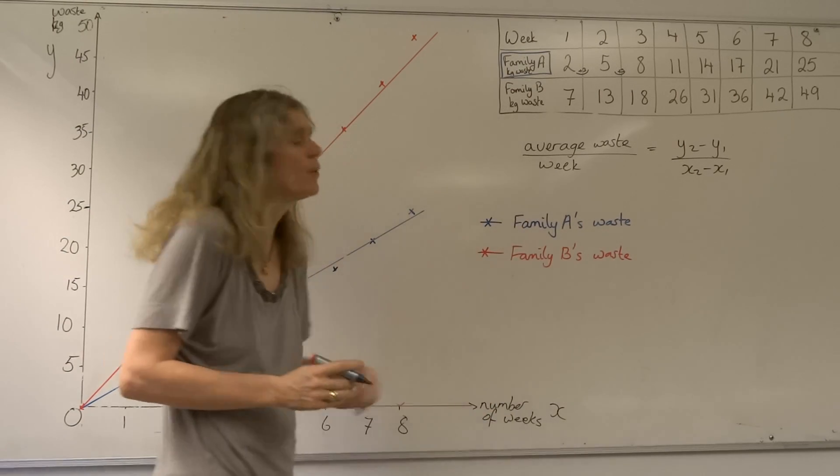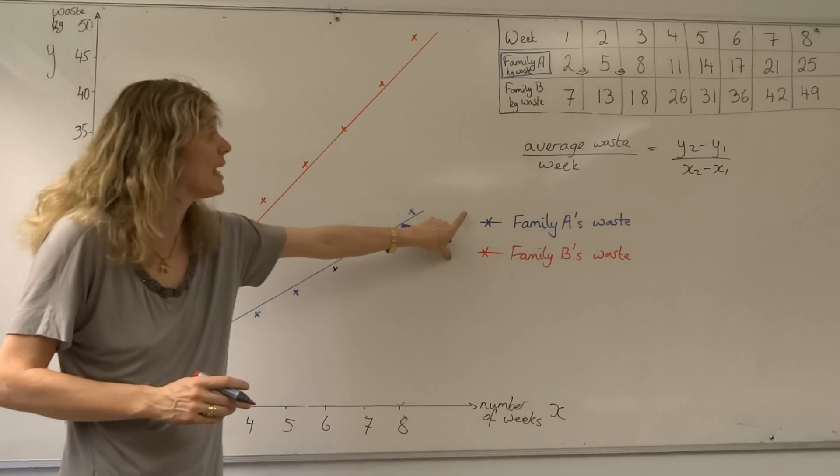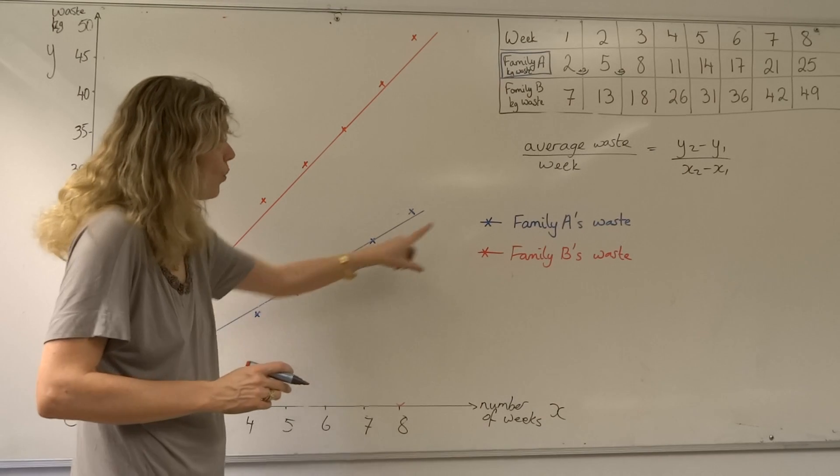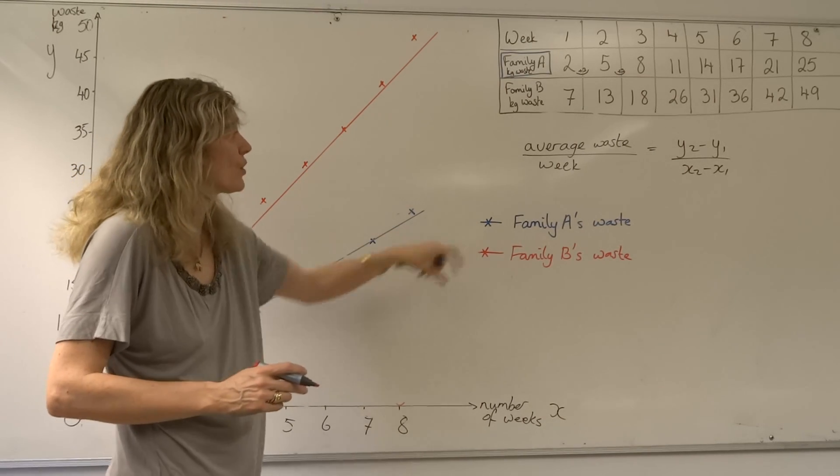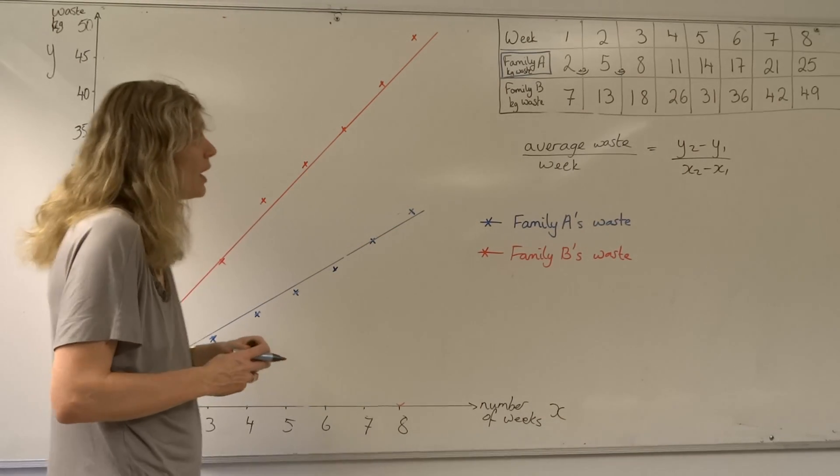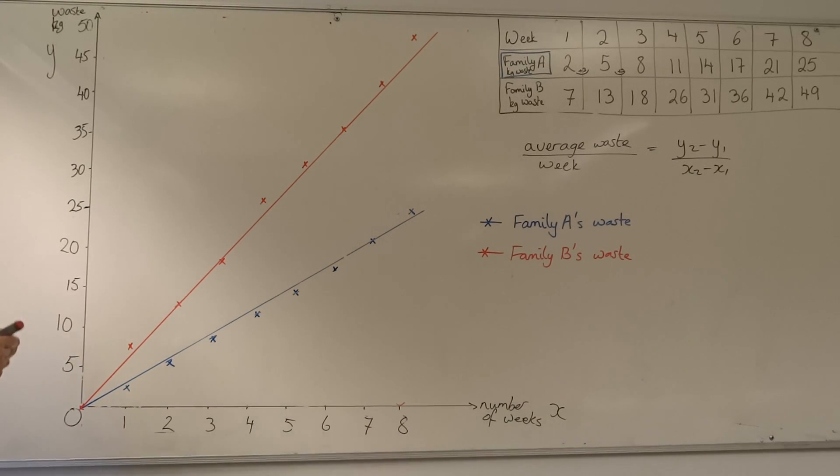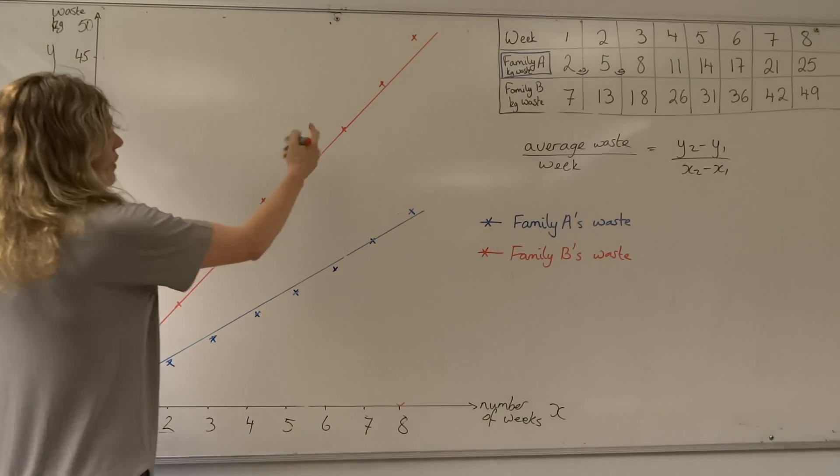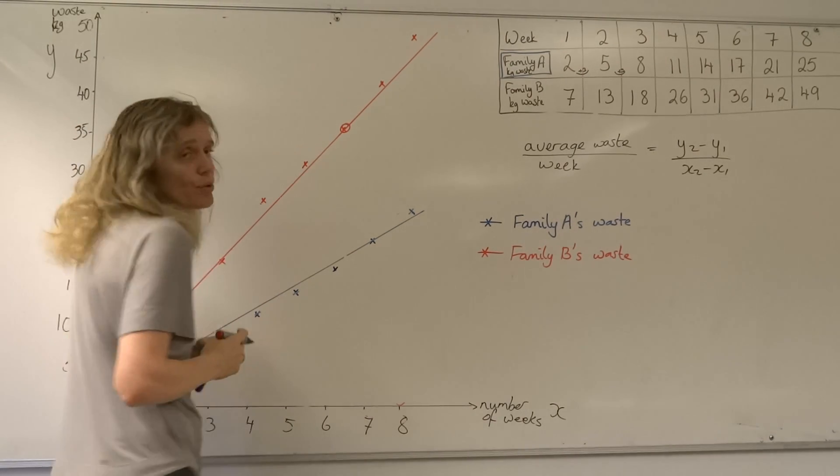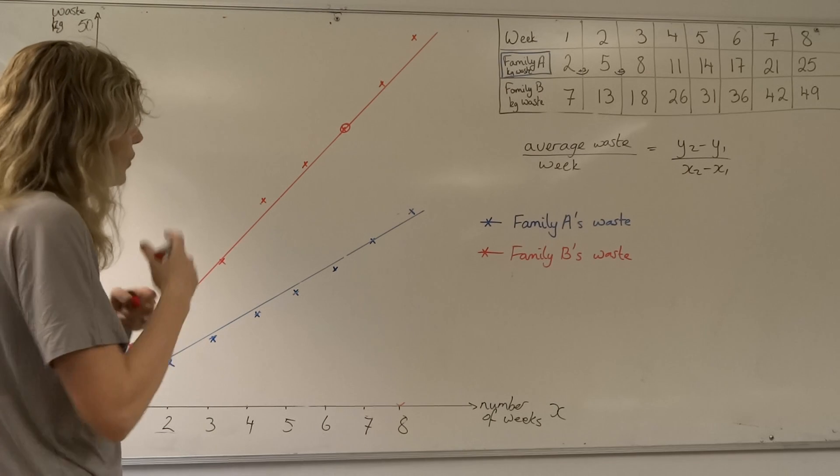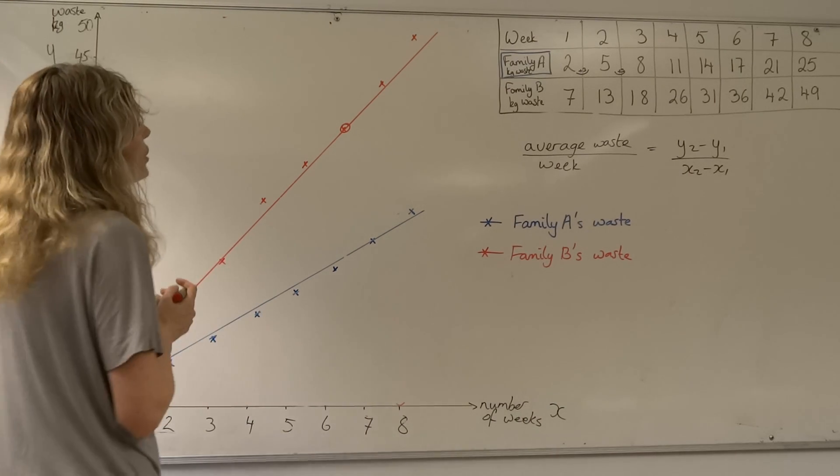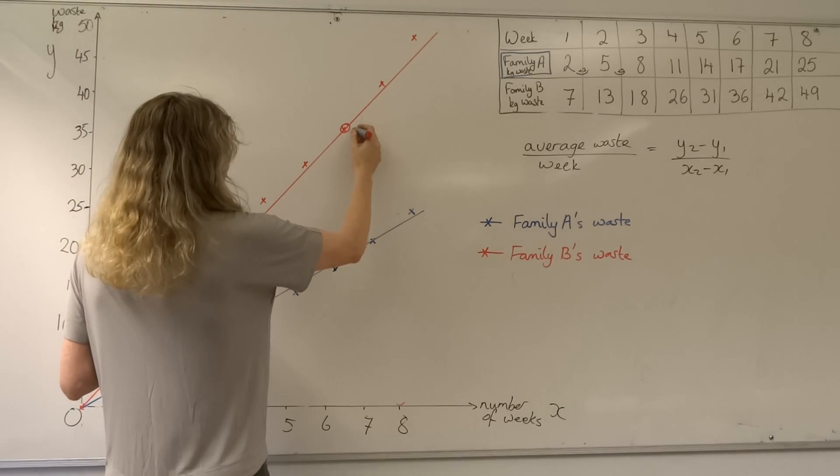We always explain what we're doing as well. We call this the key to the graph, showing what the lines on the graphs are representing. We would like to know the average waste per week. A good way to do that would be to take a point that's already going exactly through the gradient. Even though the gradients aren't perfect, I'll just show you an example of what this should look like.